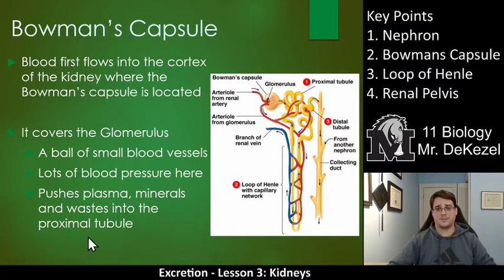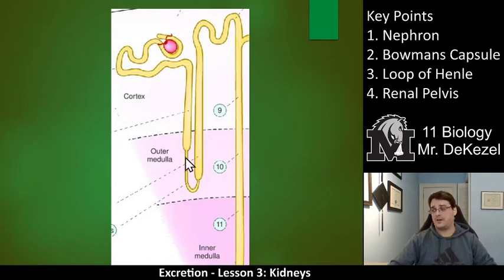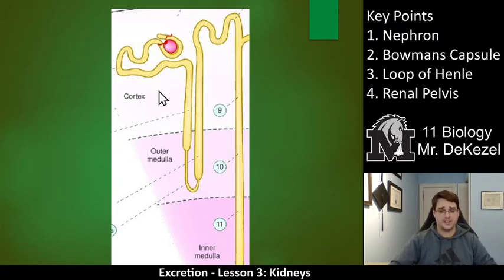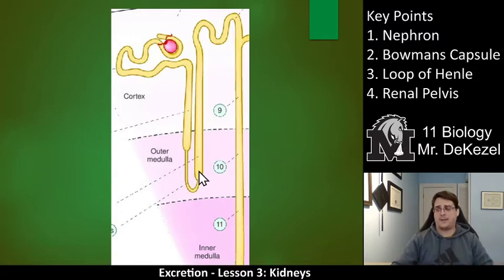The next stage is the proximal tubule, which is twisted up and goes down in a loop into the medulla. Some nephrons extend into the outer medulla, some into the inner medulla, depending on where each nephron is located — there are millions of them. The medulla is where all the filtration back and forth happens: if too much water went into the tubule, some is taken back into the blood; if not enough sodium went in, more is pushed in. That balancing act happens all through the medulla.